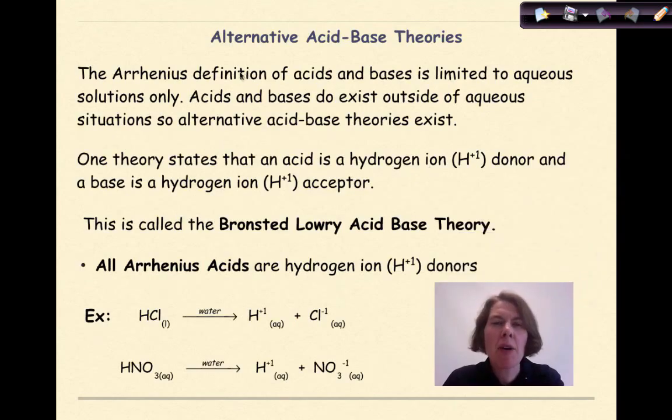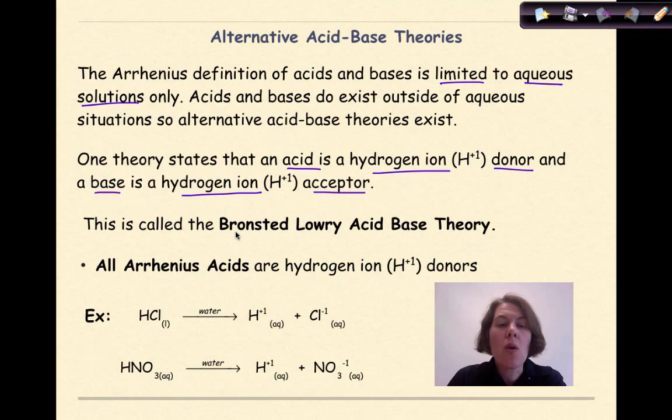Now let's talk about some alternative acid-base theories. The Arrhenius definition of acids and bases is limited to aqueous solutions only. Acids and bases do exist outside of the aqueous solution, so alternative acid-base theories exist. One theory states that an acid is a hydrogen ion H plus 1 donor, and a base is a hydrogen ion H plus 1 acceptor. This is known as the Bronsted-Lowry acid-base theory.